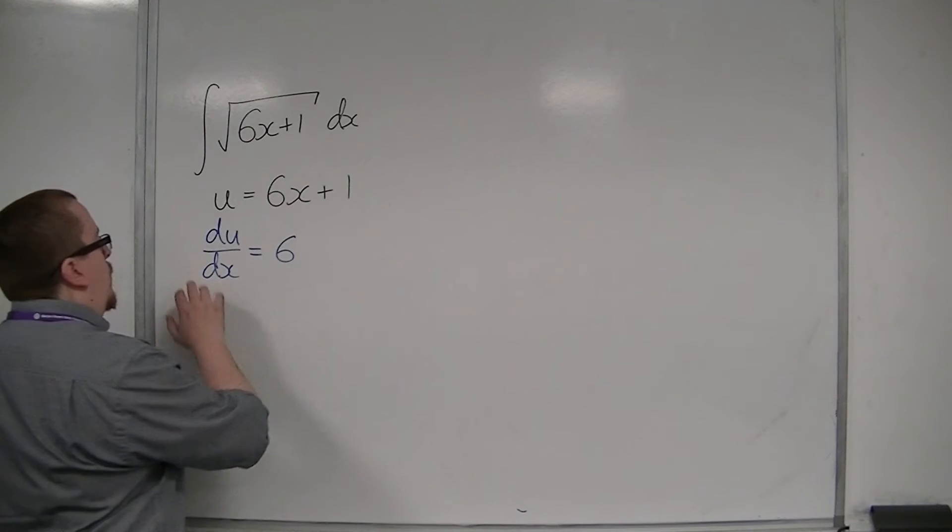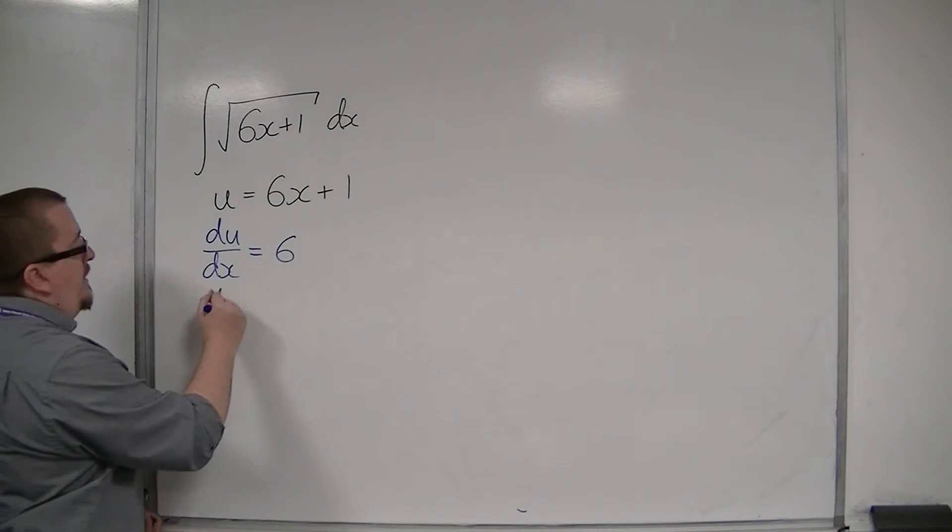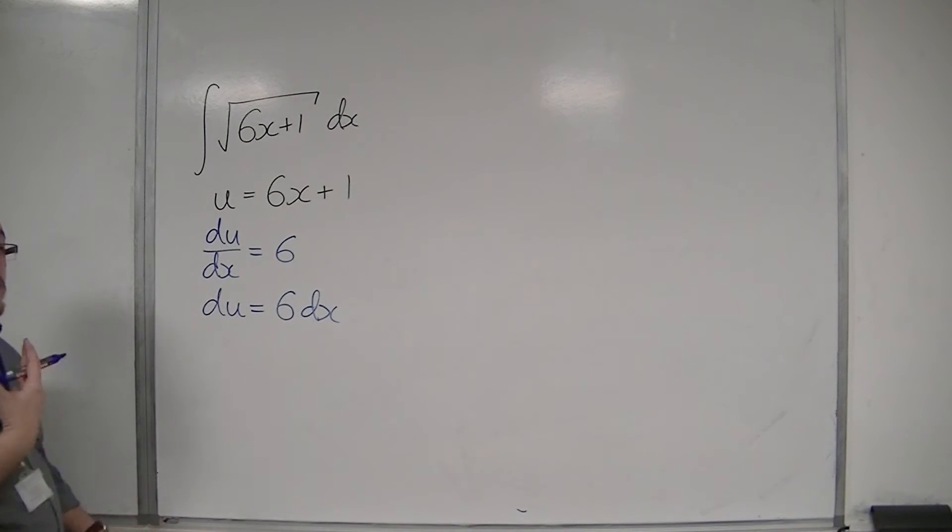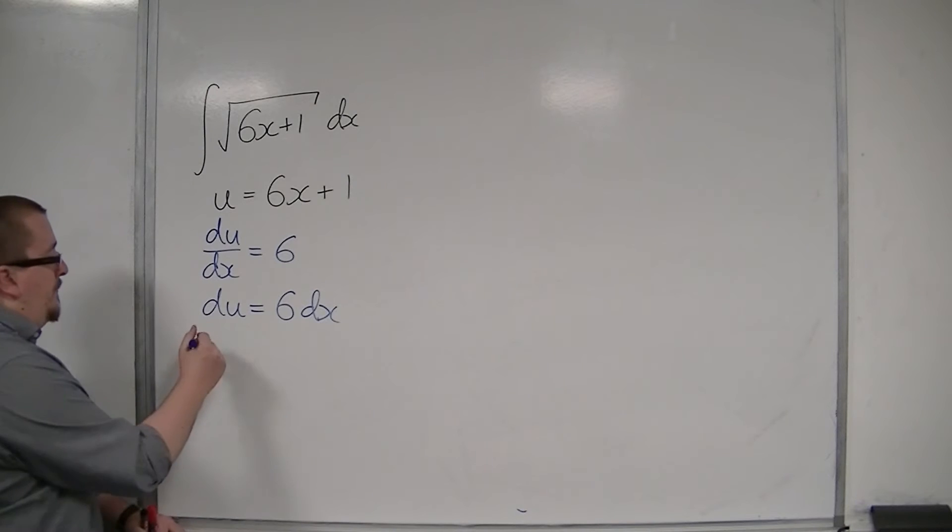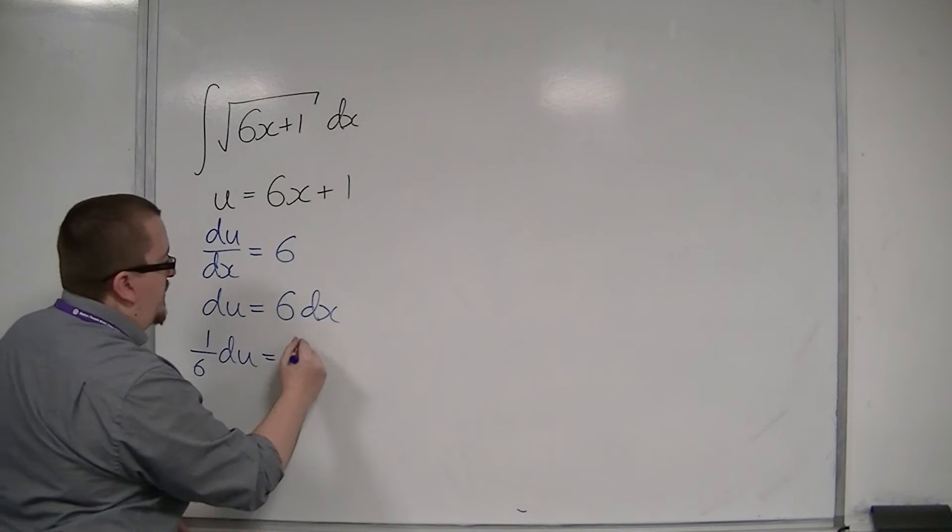So, what we're going to do is we're going to multiply both sides by the dx. So, we're going to get du is equal to 6 dx. And then, I can divide both sides by the 6. So, I'm going to get 1 sixth du is equal to dx.